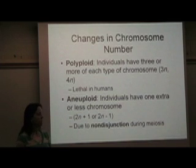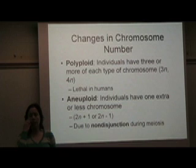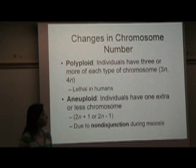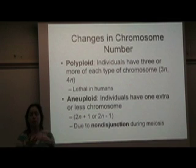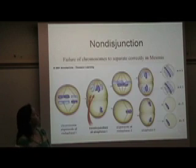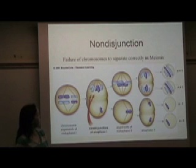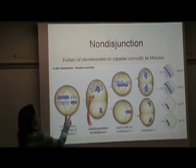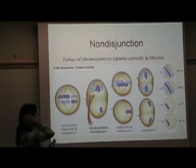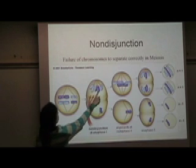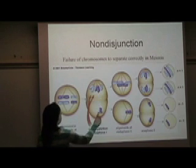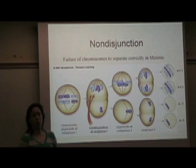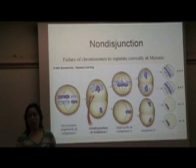Aneuploidy is the result of non-disjunction during meiosis. This can occur during meiosis 1 or meiosis 2, and it's basically that the sister chromatids don't separate correctly. This picture is showing non-disjunction at meiosis 1. Here's metaphase 1 — all the chromosomes are lined up in the middle of the cell. These two should go to the top, these two should go to the bottom, but for some reason the sister chromatids pull 3 chromosomes to the top and 1 to the bottom.